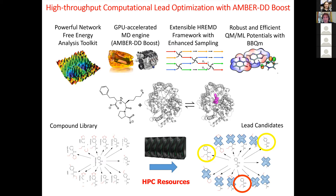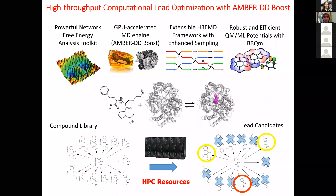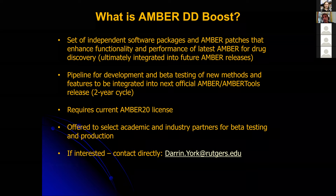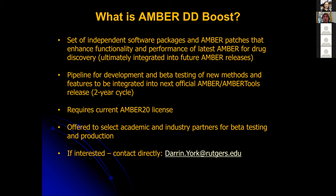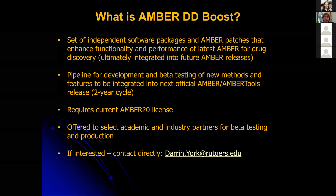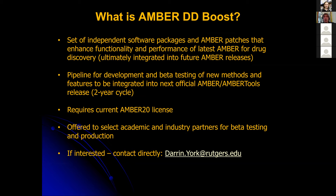The AMBER Drug Discovery Boost is a set of independent packages that build on top of AMBER, plus patches to the latest AMBER 20 code that enhance functionality and performance for drug discovery. These will ultimately be integrated into the AMBER release, but those happen only in two-year cycles. This allows a development pipeline for beta testing new methods to be integrated into the next AMBER release.